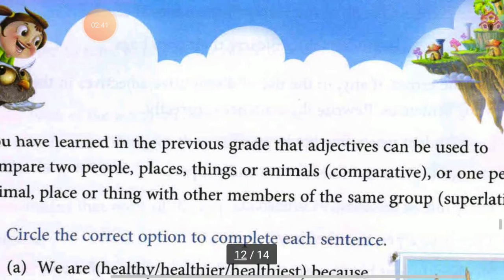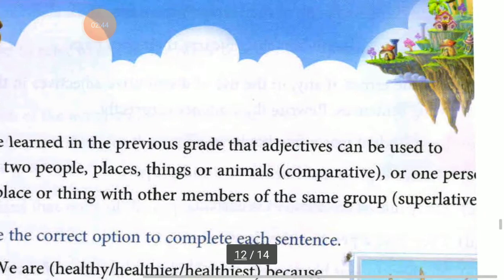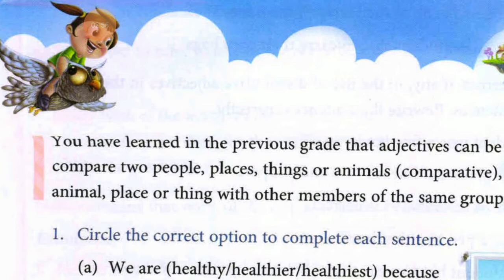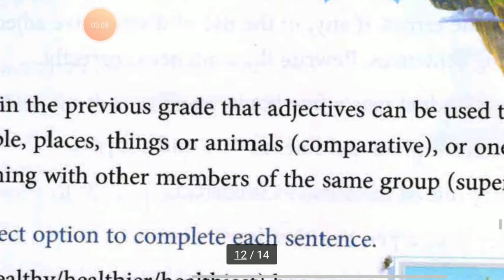Or one person, animal, place, or thing with other members of the same group — ya kisi ek vyakti, ek praniy, ek sthaan, ya ek vastu ko baaki saare sadasyon ke saath tola jaye, iski tulna ki jaye. Aisi adjectives ko superlative kaha jaata hai.